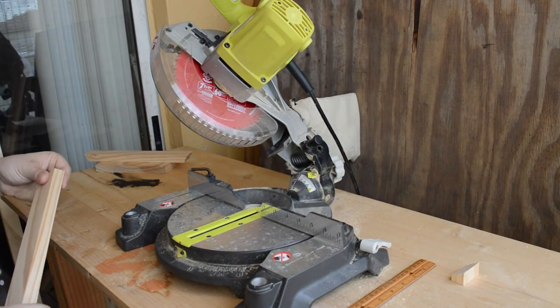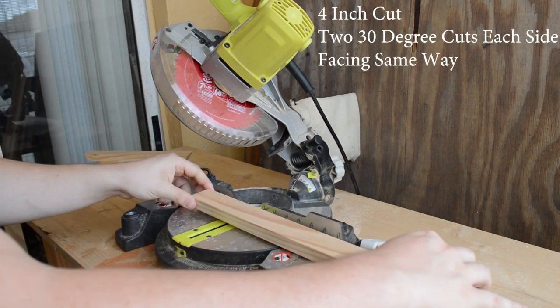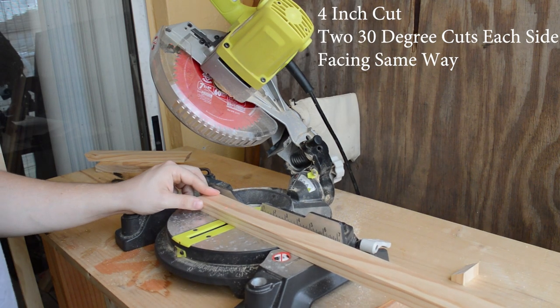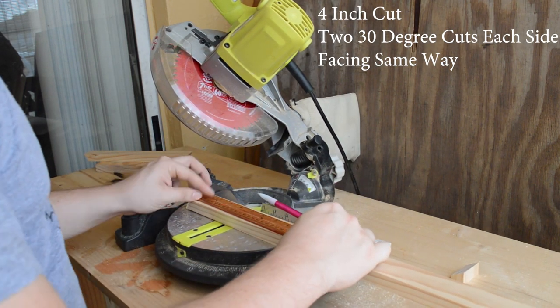For this piece, we're going to use the same wood we just used. It's going to be two 30-degree cuts on each side, the same as the other one, except this is going to be a 4-inch stick instead of a 10-inch.